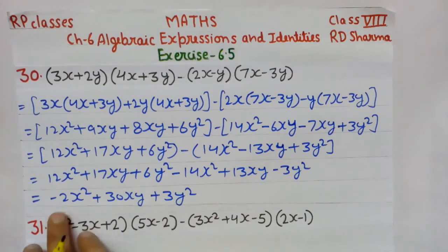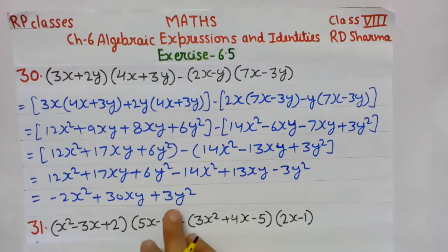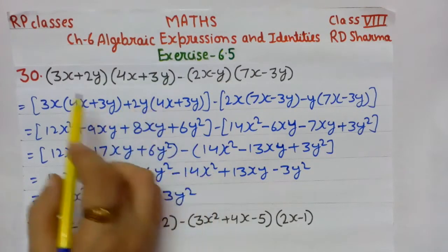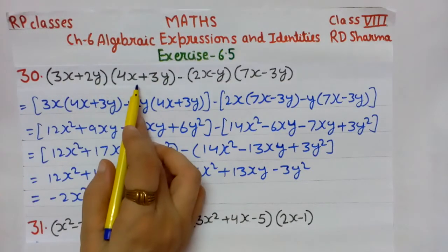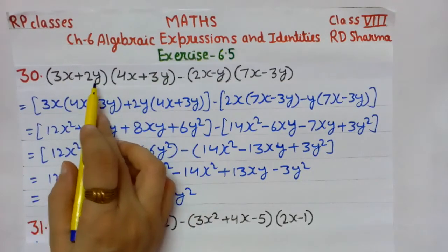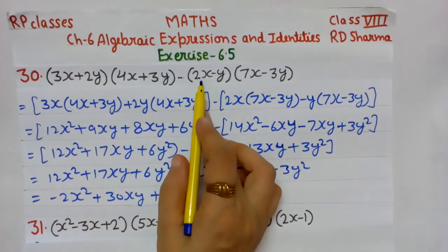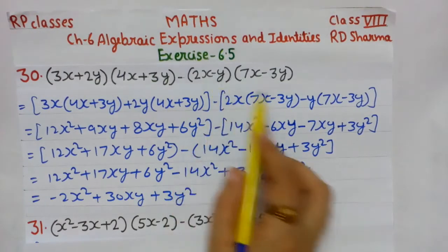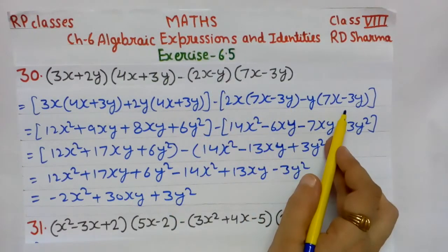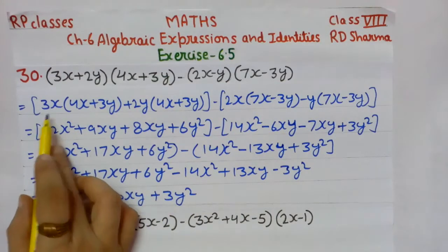Answer is: −2x² + 30xy + 3y². Let me repeat: I broke the first bracket — 3x multiply second bracket, plus 2y multiply second bracket. Here also: 2x multiply second bracket, then minus y multiply second bracket. Both are taken in a whole bracket.